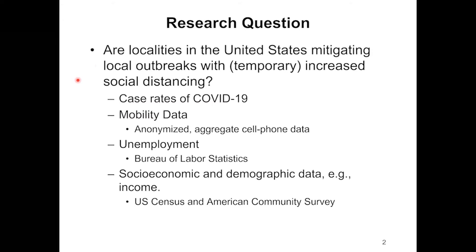We are looking at the counties in the U.S. For that, we need a lot of data, all of it available for free and openly. The case rates of COVID-19 we can get from public health departments across the country. We also need mobility data — aggregated cell phone data that show how much people in each county increase or decrease their movement. We also need controlling variables including unemployment and median household income, from the Bureau of Labor Statistics, the U.S. Census Bureau, and the American Community Survey.